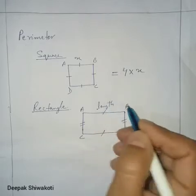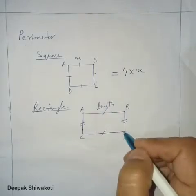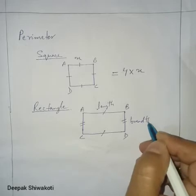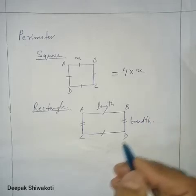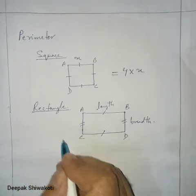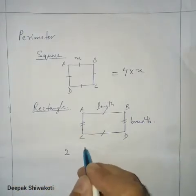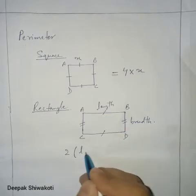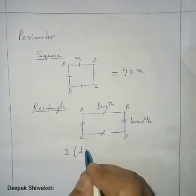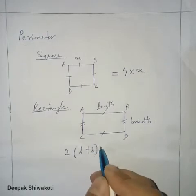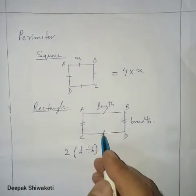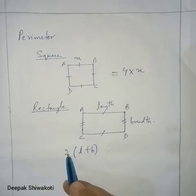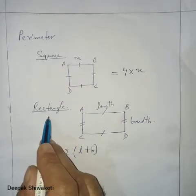In a rectangle, the longer side is called the length and the shorter side is called the breadth. The perimeter of a rectangle is 2 times (length plus breadth), because there are two lengths and two breadths.